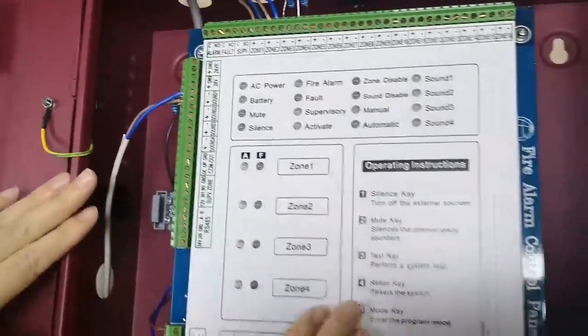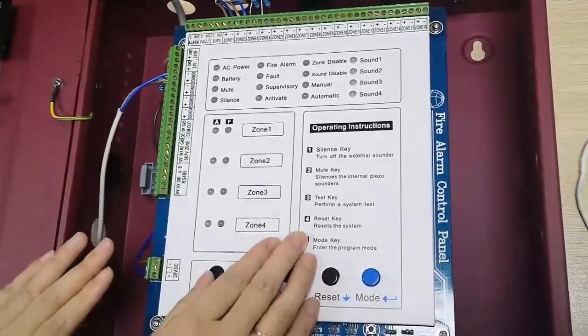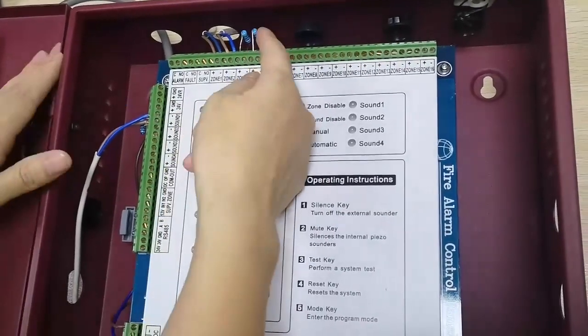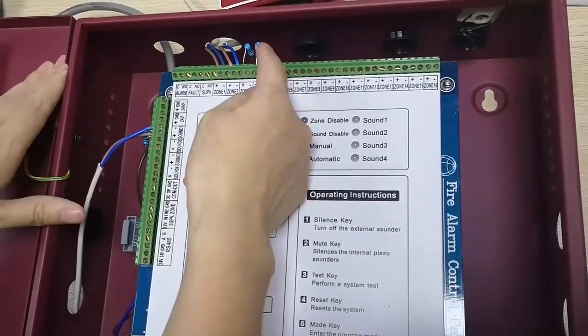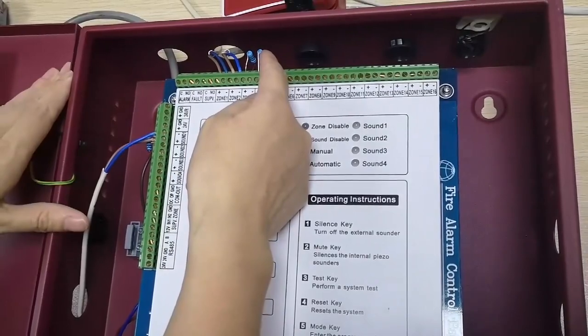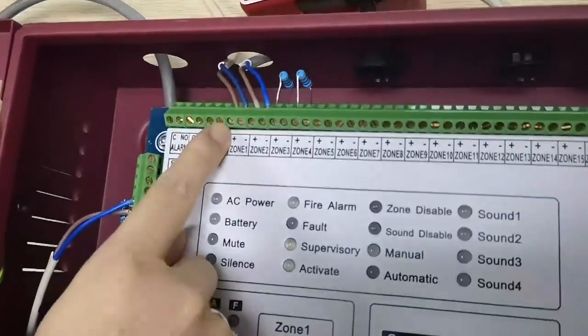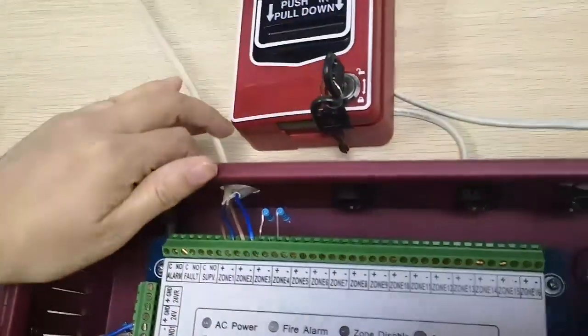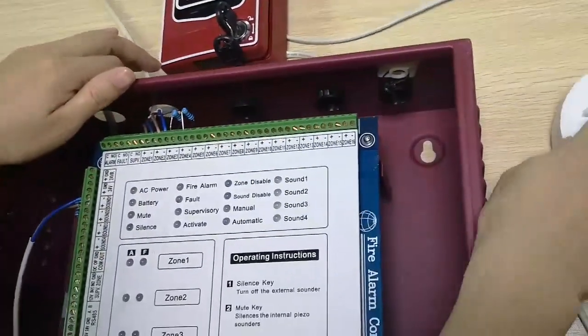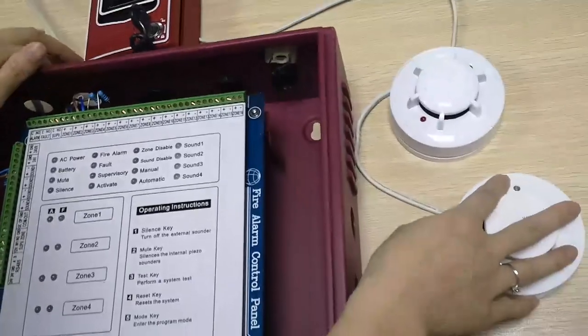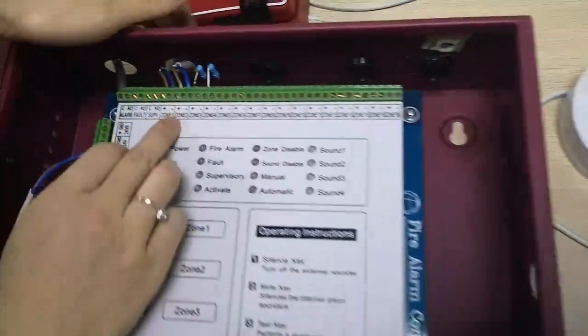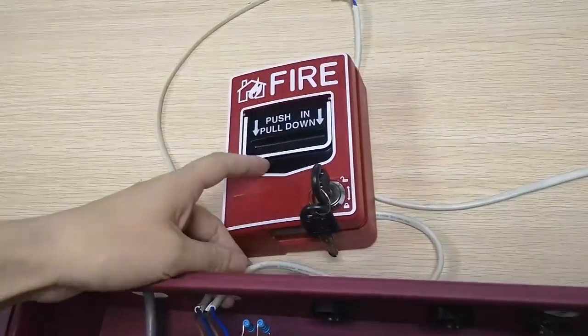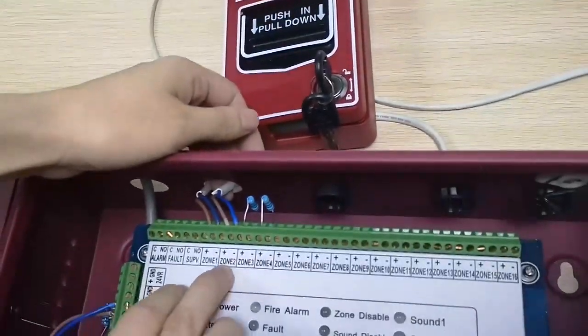Okay, this is the 4ZU fire panel, ZU1 to ZU4. There is EOL resistor. We already connect ZU1 to detectors and connect one call point to ZU2.